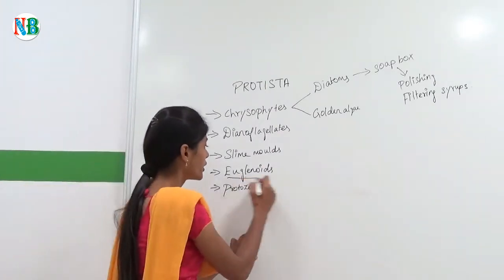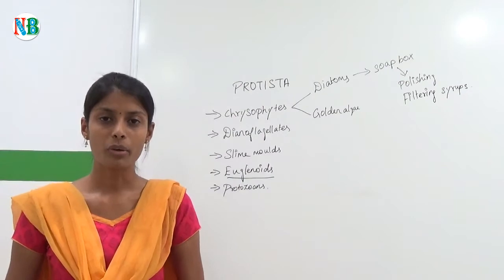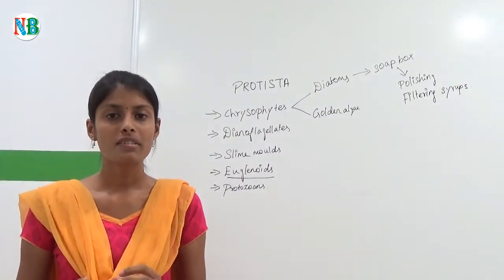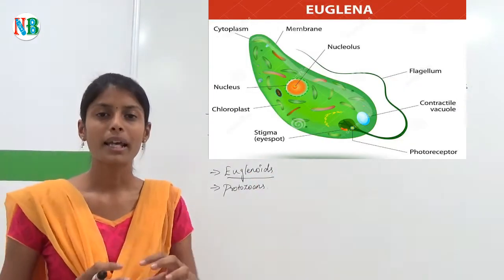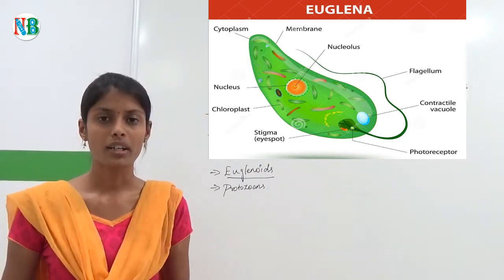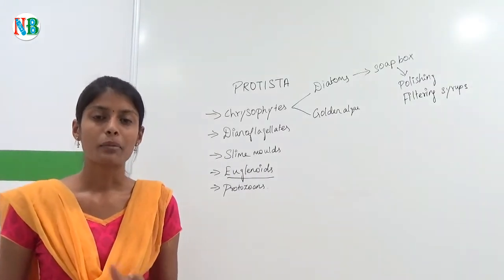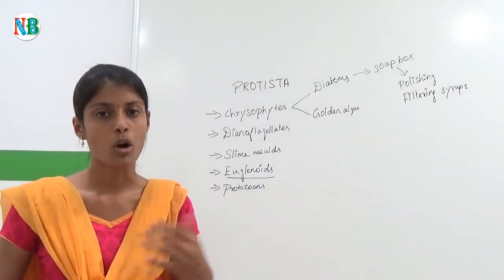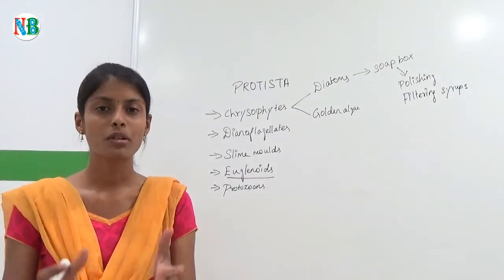Now we are going to see about the euglenoids. The majority of euglenoids are found in fresh water and stagnant waters. Instead of a cell wall, they have a protein-rich layer called the pellicle, which makes them flexible. They have two flagella — one is short and another one is long. Their mode of nutrition is interesting: in the presence of light they are autotrophic, and in the absence of light they are heterotrophic, so they are mixotrophic.